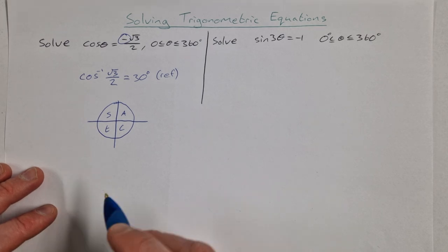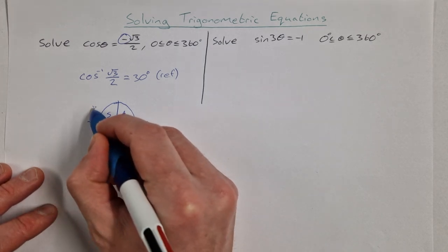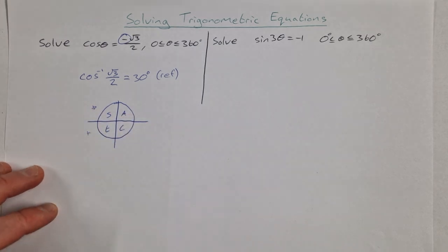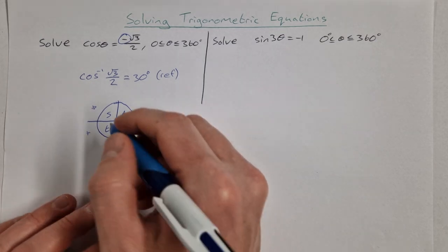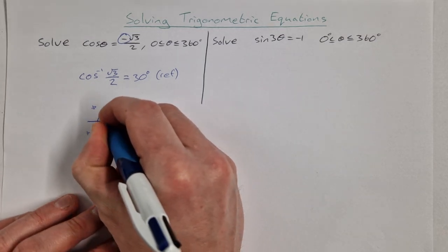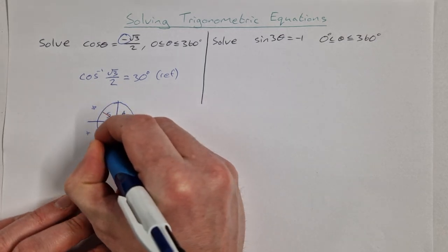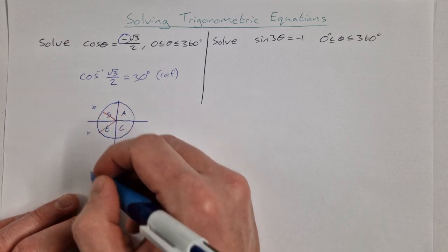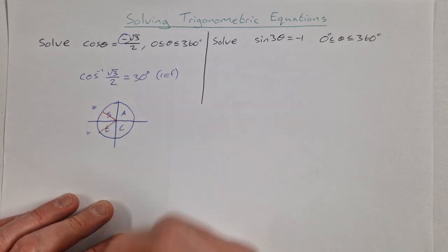So cosine is negative here in quadrant 2 and here in quadrant 3. So I'm just going to sketch in a 30 degree angle into both. You go from the x-axis up into quadrant 2, from the x-axis down into quadrant 3.